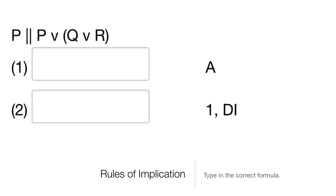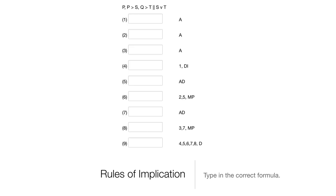This one looks puzzling — we start with P and need to infer a disjunction. If you're going to start with a single proposition and infer a disjunction, that's disjunction introduction. Yes, it might be a complex disjunct, but you can still do it — disjunction introduction allows a complex inference.